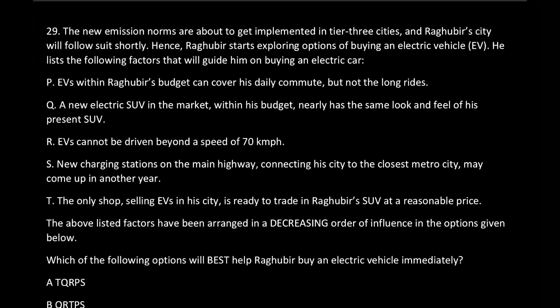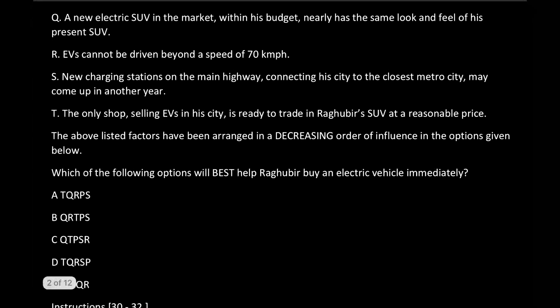Question 29: the new emission norms are about to get implemented in all three cities and Raghuveer's city will follow shortly. Hence Raghuveer starts exploring options of buying an EV and lists down factors that will guide him. The question asks: which of the following options will best help Raghuveer buy an electric vehicle immediately? We need to select factors that will motivate him to buy an EV right away.